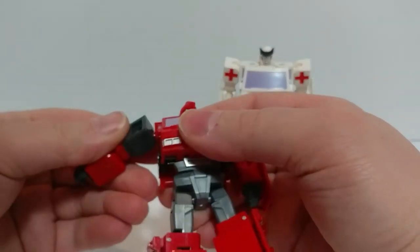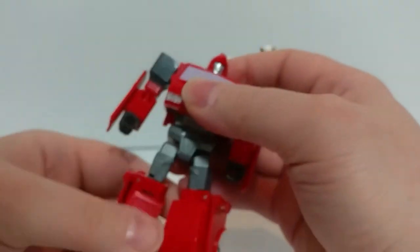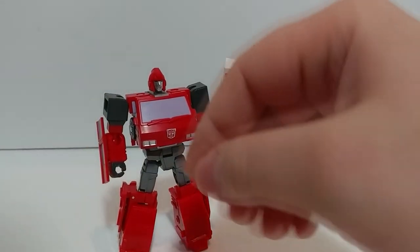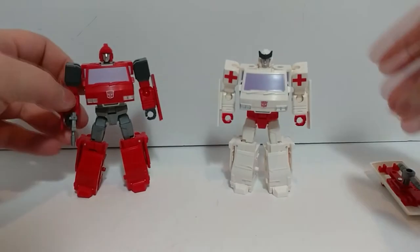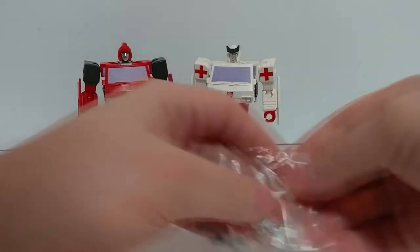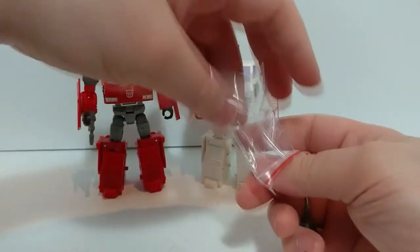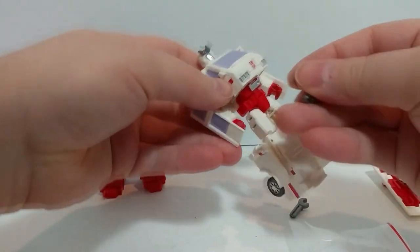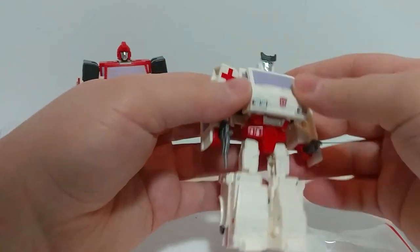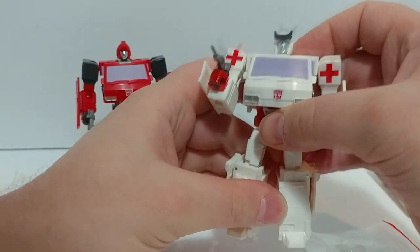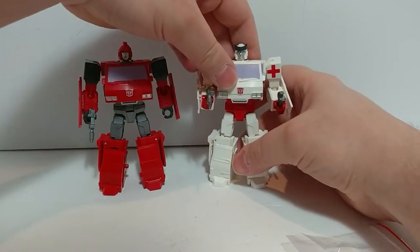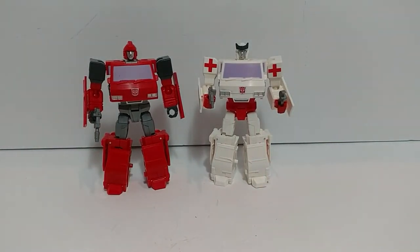Good thing Ratchet's here nearby, he can fix you right up Ironhide, so you can get back to busting Decepticon chops. Let's give him a pistol. There we have them side by side. Let's give Ratchet his new accessories, I mean Ambulance. I think that really helps out with the characterization. There we are, nice.